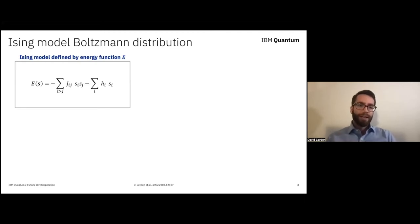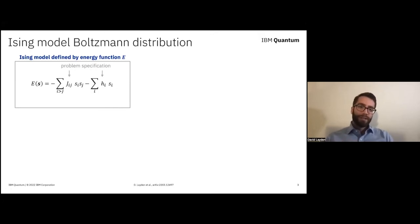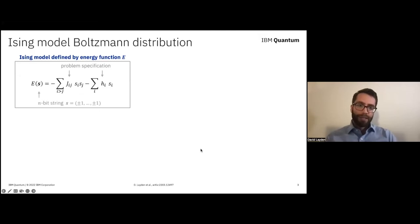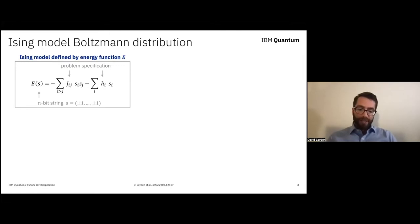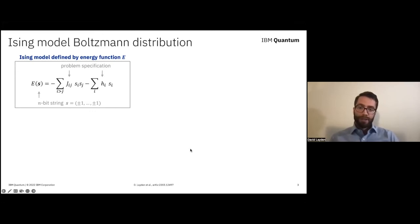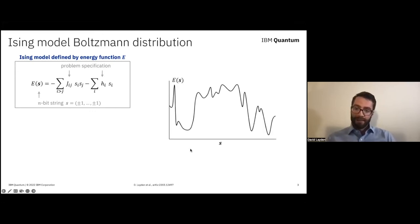The underlying setting here has to do with the classical Ising model, where each instance of this model is defined by coefficients j and h that are given to us as part of the problem statement. Together, these define this function E of s, sometimes called an energy function, which assigns some real scalar value to every n-bit string s. These n-bit strings are sometimes called spin configurations or just states, depending on your field. It's convenient and common to visualize this function in 1D as defining a sort of landscape.